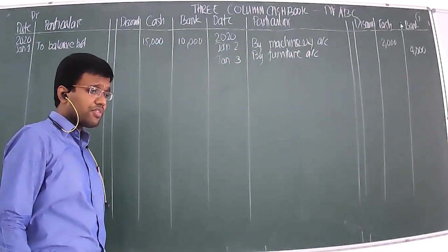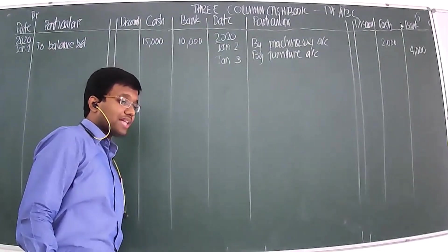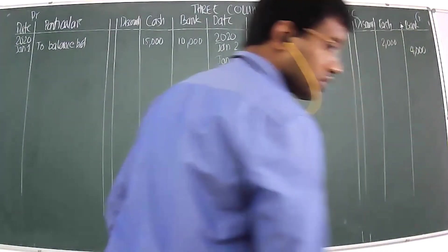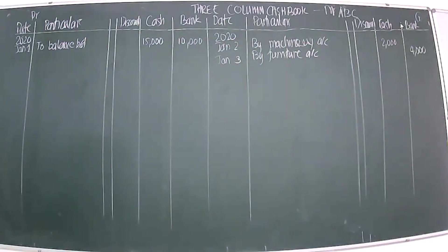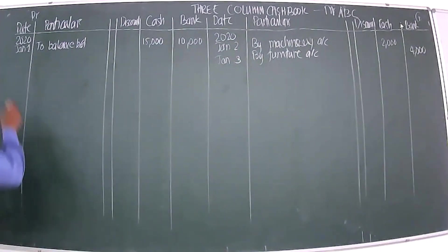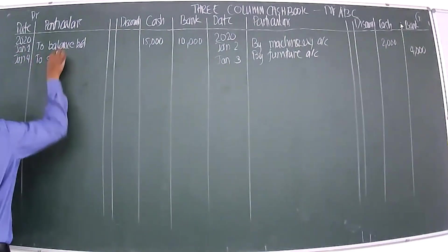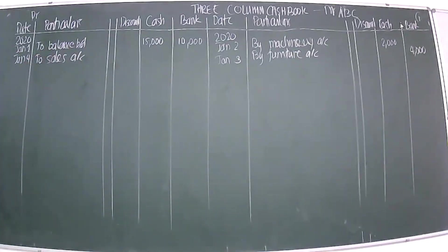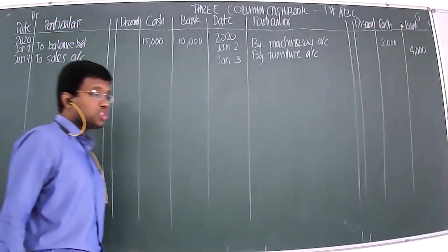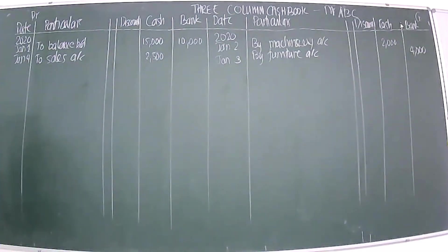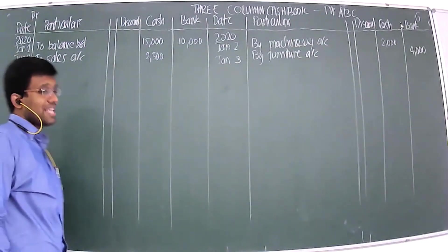January 4th: sold goods for cash ₹2,500. Here you are selling goods and receiving cash, so this transaction is recorded in the cash column. Entry: To Sales Account, ₹2,500 in the cash column.